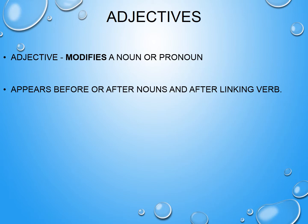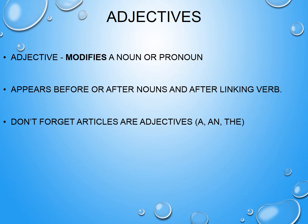I think we had also mentioned that there are a couple of special kinds of adjectives worth pointing out. There are the articles, which consist of three words: a, an, and the. Those are special adjectives because they can point out a particular thing versus any old thing. For example, 'a teacher' would be different than 'the teacher.'